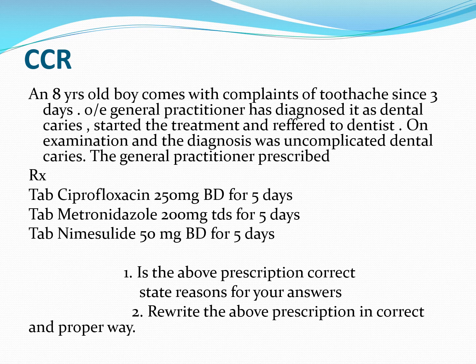Tablet nimesulide is a non-steroidal anti-inflammatory drug that preferentially inhibits COX-2 enzyme. However, it should be avoided in children because it can cause hematuria leading to renal damage. Instead of nimesulide, we can give paracetamol 250 mg or ibuprofen 200 mg. So the correct prescription omits ciprofloxacin and nimesulide, replaces them with amoxicillin 250 mg 3 times daily and paracetamol 250 mg, and also omits metronidazole.